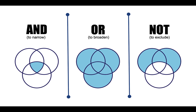So to recap: use AND to narrow, OR to broaden, NOT to exclude, and parentheses to group terms together. Each of these operators — AND, OR, and NOT — can be powerful tools for helping you find relevant sources for your research.